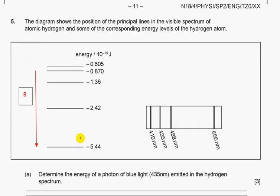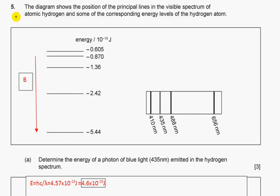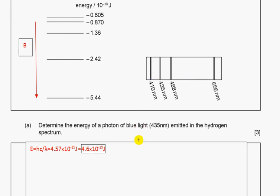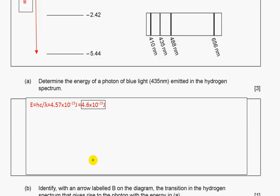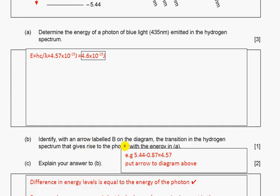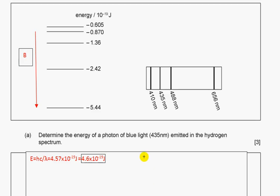Question five: The diagram shows the position of the principal lines in the visible spectrum of atomic hydrogen and some of the corresponding energy levels. Determine the energy of a photon of blue light in the hydrogen spectrum. Formula from the booklet gives us 4.6 times 10⁻¹⁹ joules. Identify with an arrow labeled B on the diagram the transition in the hydrogen spectrum that gives rise to this. The energy change should be equal to 4.6, which I found is for the combination of -5.44 and 0.